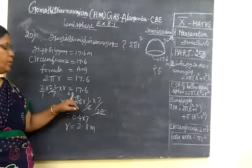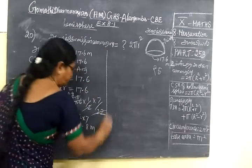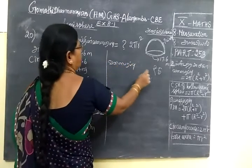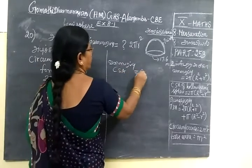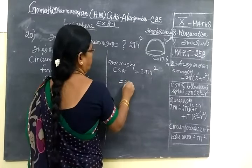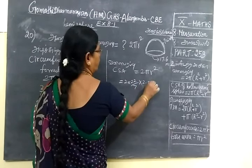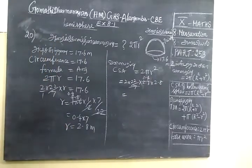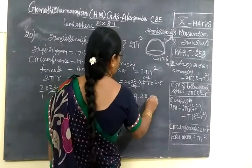Now we are going to calculate the curved surface area. That means CSA. The CSA formula is equal to 2πr². So 2 into 22 by 7 into 2.8 into 2.8. The answer is 49.28 meter square.